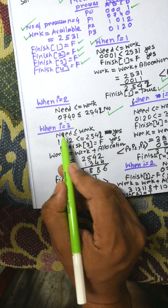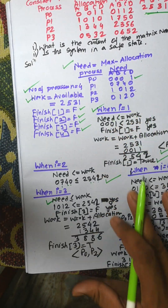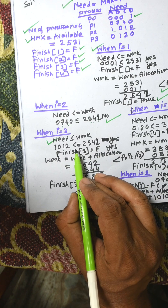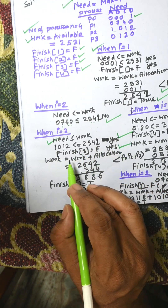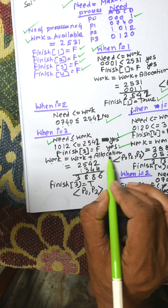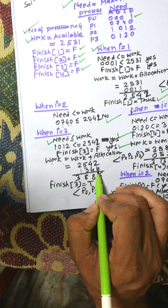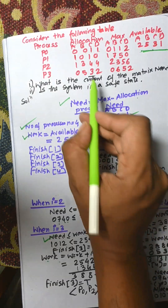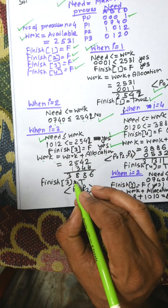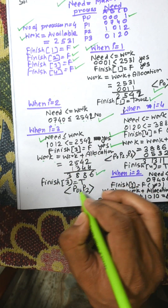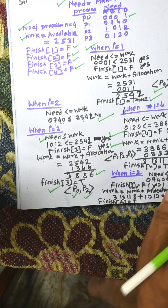When i = 3 (P2), we check Need ≤ Work. Need is 1, 0, 1, 2 and Work is 2, 5, 4, 2 — yes. Finish[2] is false, so we proceed. Work is updated: 2, 5, 4, 2 plus allocation 1, 3, 4, 4 gives new Work = 3, 8, 8, 6. Finish[2] is now true. P0 and P2 are set in the safe sequence.